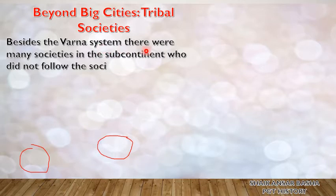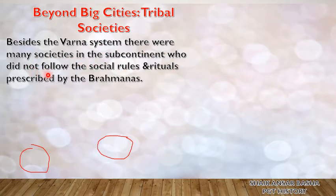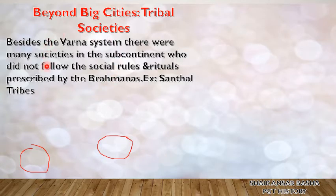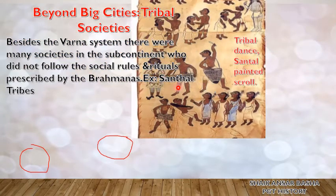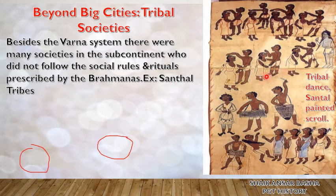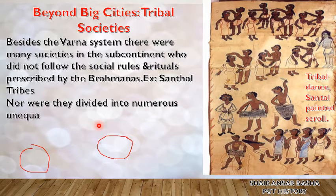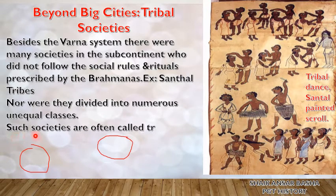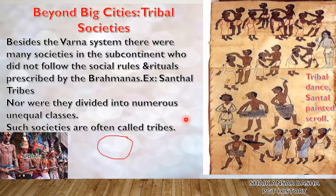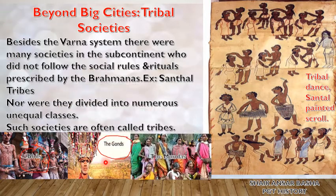Besides the varna system, there were many societies in the subcontinent that did not follow the social rules and rituals prescribed by the Brahmanas. Such societies are called tribal societies. For example, Santal tribes lived in Jharkhand, Orissa and West Bengal. This is a Santal tribal dance — a folk picture. They were not divided into numerous unequal classes but had their own folk culture, customs, traditions and language. Such societies are often called tribes. The Bhils and the Gonds are also important tribal communities.